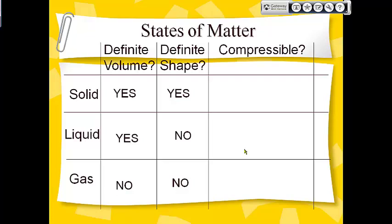Which ones can be compressed — pushed closer and closer together? Solids cannot be compressed; if you push on them you end up breaking them. Liquids cannot really be compressed either. But gases can actually be compressed. Think about a syringe: if you put your finger on the end and push the plunger in, you can push the air down and compress it. When you do that, you create something called gas pressure.